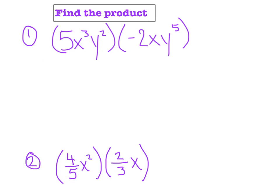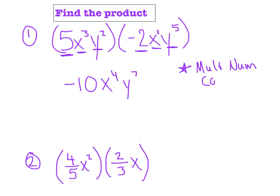We're going to focus on more multiplying, starting with monomials and eventually building up to binomials, trinomials, and so on. There are two key things to focus on. Number one: multiply the numerical coefficients. In this case, 5 and negative 2 give negative 10. Number two: add the powers for the like bases. I've got x cubed and x to the 1st — an invisible one — so adding the 3 and 1 gives x to the 4th. Then for the y's: y squared times y to the 5th gives y to the 7th.